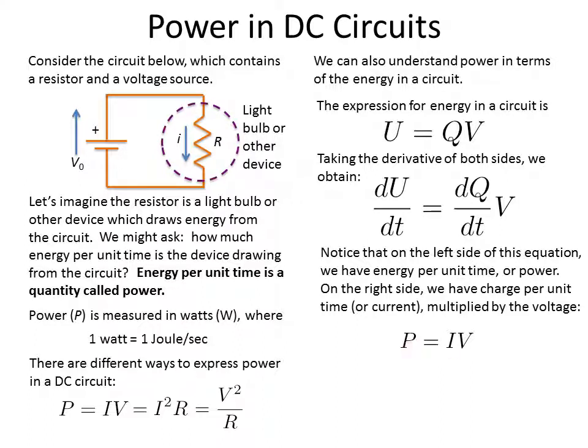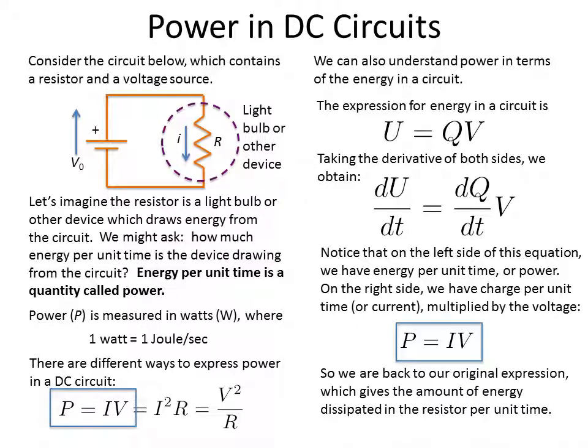So we can see P is equal to IV, the power is equal to the current times the voltage, is nothing more than the change of energy with respect to time times the change of charge with respect to time times voltage. So we can see, again, we reconstructed our equation back here. And as I said, these other two we can get from Ohm's law.